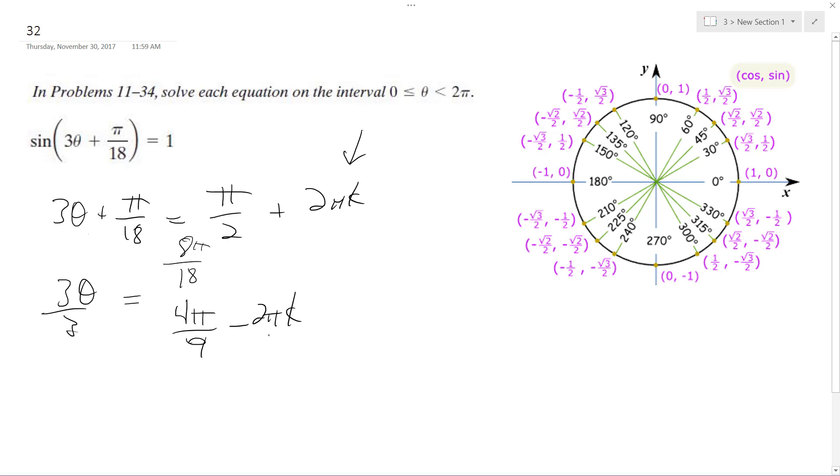All right, and then divide by 3 on all sides, so I get 4 pi over 27, plus 2 pi k over 3.